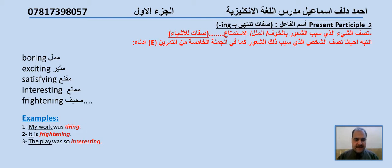Sometimes we use a present participle to describe the person that causes that feeling, as in sentence number five, exercise E in your activity book. أحياناً نستخدم اسم الفاعل ليصف الشخص الذي سبب ذلك الشعور. على سبيل المثال: boring ممل، exciting مثير، satisfying مقنع، interesting ممتع، frightening مخيف.